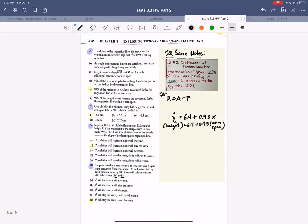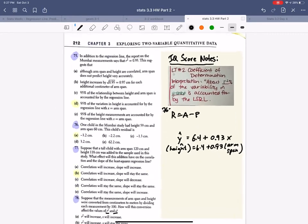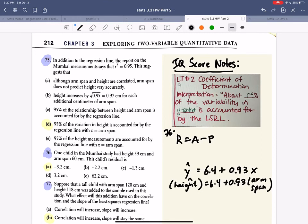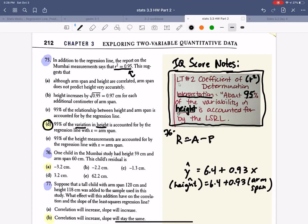So I've got my extra piece of notebook paper, and I'm going to keep going here. 75. It says, in addition to the regression line, the report on Mumbai measurements say that r squared is 0.95. So if I look in my notes from the IQ score, I noticed my learning target 2 was, this is how we interpret the coefficient of determination, which is r squared. So I'm saying that about 95%, that's where I'm getting that number, of the variability in height is accounted for by the least squared regression line. That is what d says. That is how I interpret the coefficient of determination, also known as r squared.